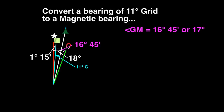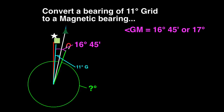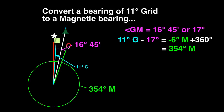Draw the 11 degree grid bearing onto the diagram. The answer we are seeking is the angle from magnetic north to the target. Remember, the angle needs to go clockwise from magnetic north to the target bearing. The magnetic bearing we are seeking is smaller than the grid bearing we were given, so we subtract 17 degrees from the 11 degree grid value. This gives us a result of minus 6 degrees. Bearings need to be given in terms of a 0 to 360 degree circle, so add 360 degrees to the minus 6 degrees to get the answer of 354 degrees magnetic.